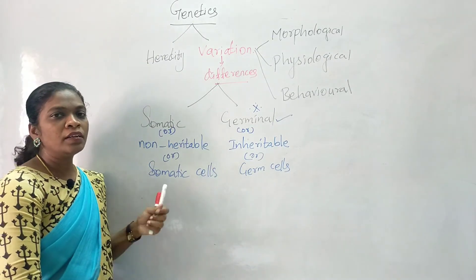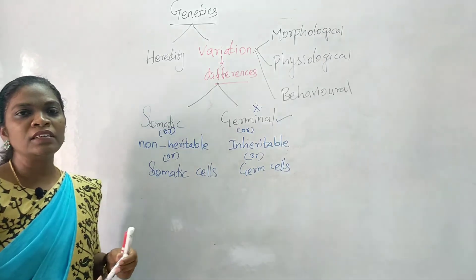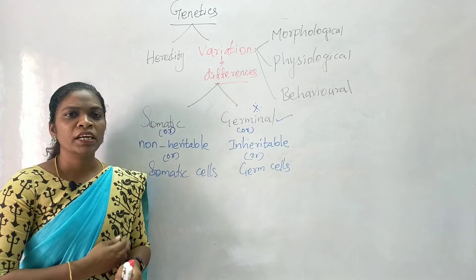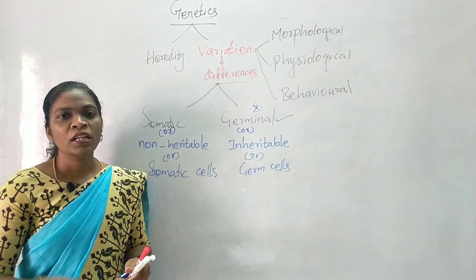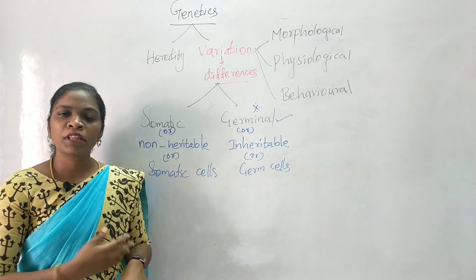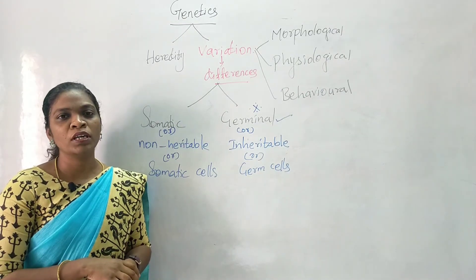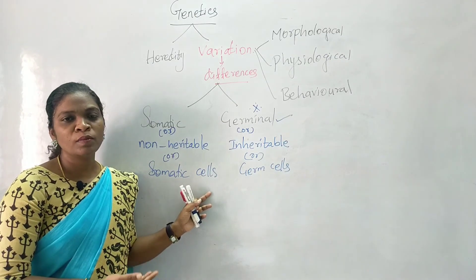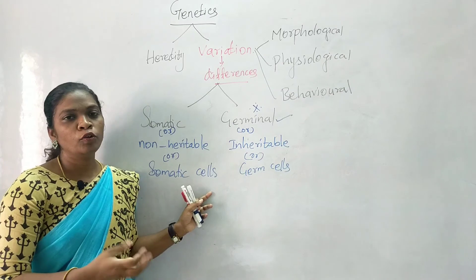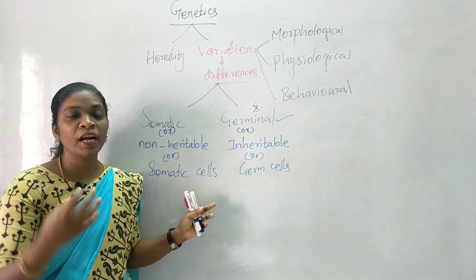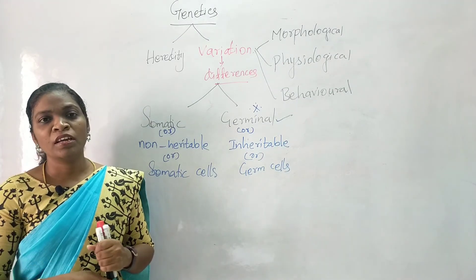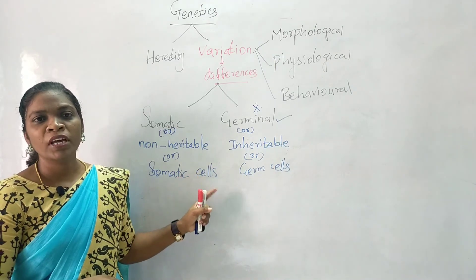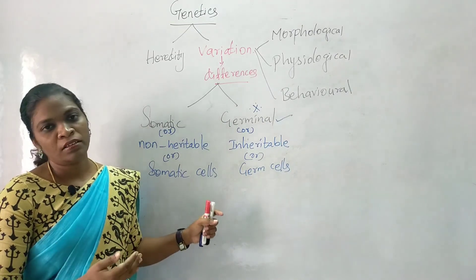For example, in somatic variation: imagine a person met with an accident and lost his limb. If this individual produces an offspring, the young one is not going to be born without the limb — he is going to be born with normal limbs only. Because losing the limb was due to an accident, it is an acquired variation due to environmental conditions. Changes affecting somatic cells will not be passed to the next generation.